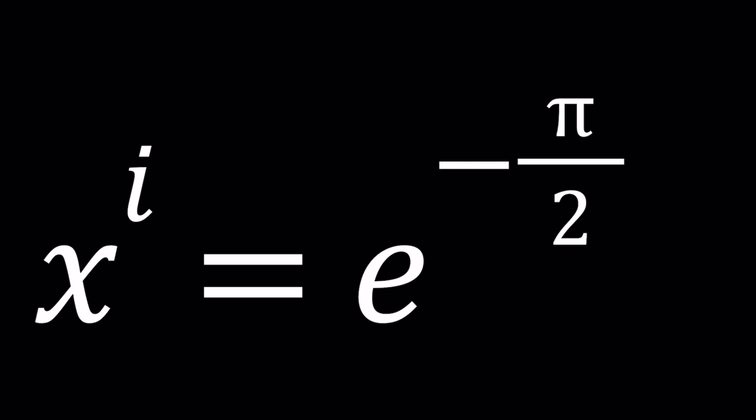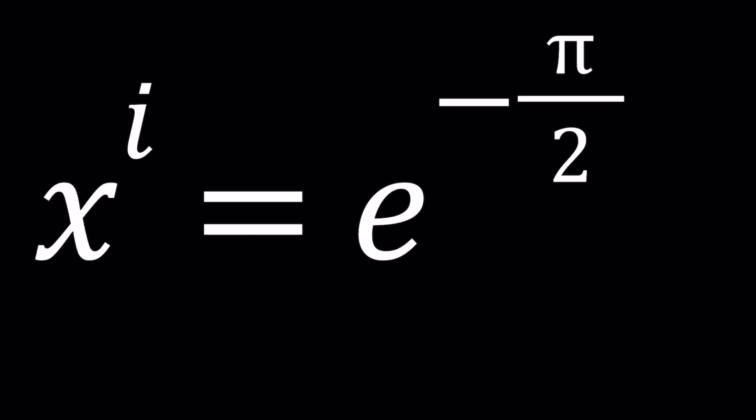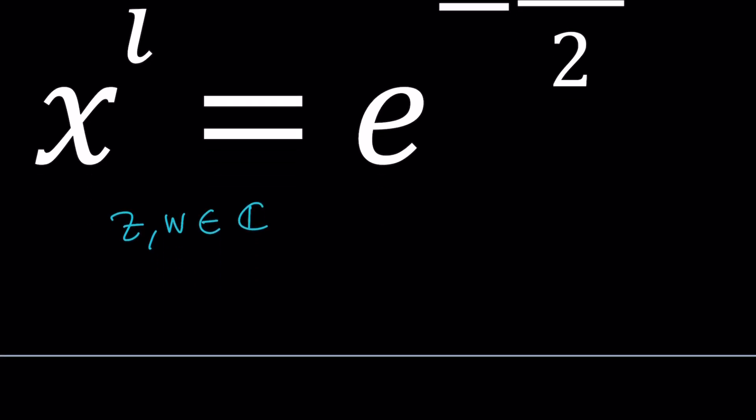Let's see how we can solve this problem. Since i is imaginary, not real, we're going to use a formula. Whenever you have two complex numbers z and w, suppose z and w are elements of the set of complex numbers ℂ.